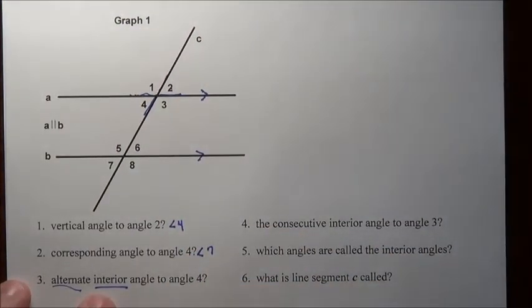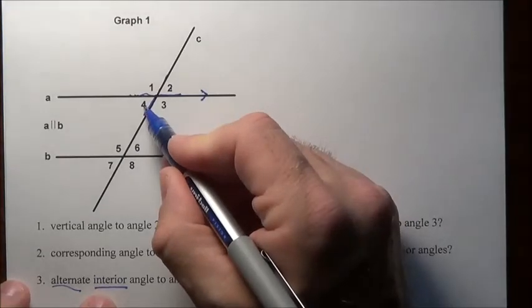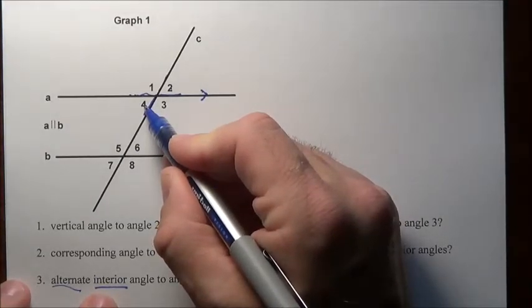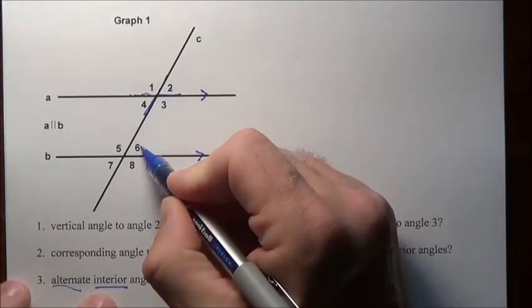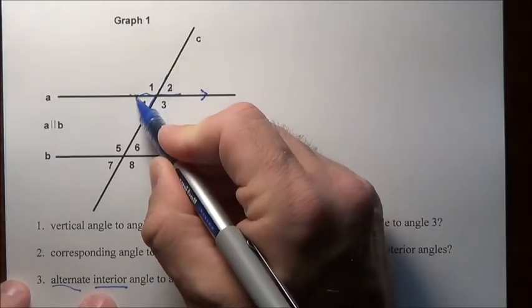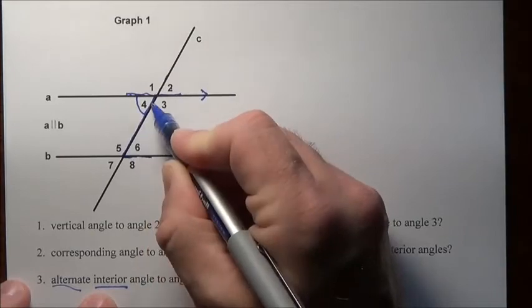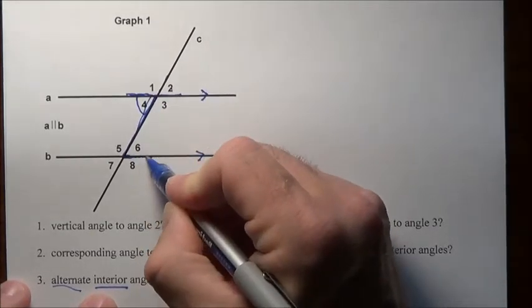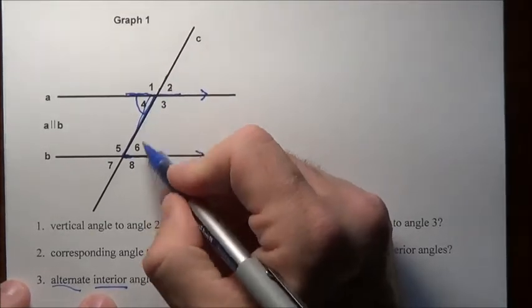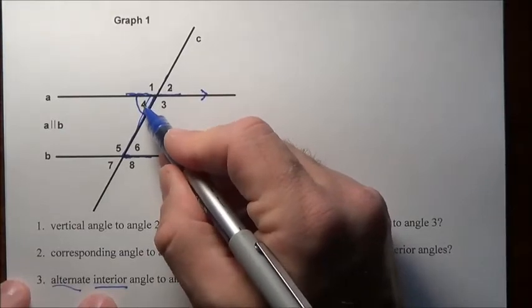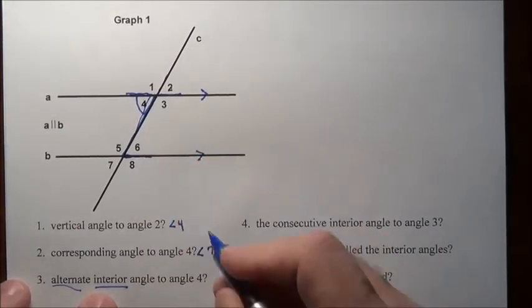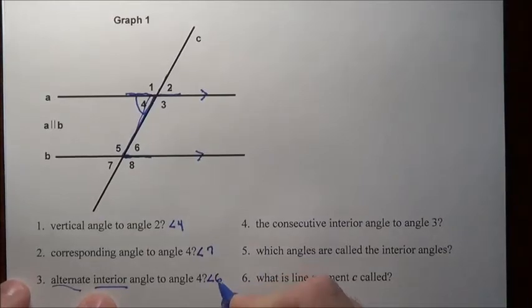Now alternate means opposite side. So here's four. The alternate interior angle is not three, but it's down here at six. Alternate interior angles. I call them the Z-meisters because remember they make this sort of Z piece here. So we call them the Z-meisters. Those will always match up. That angle that makes the top part of the Z will match the bottom part of the Z. So the answer here is angle six.